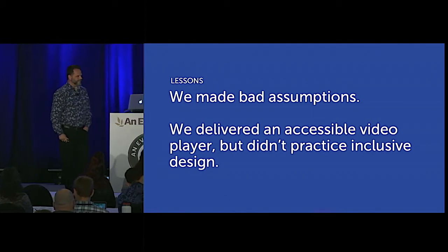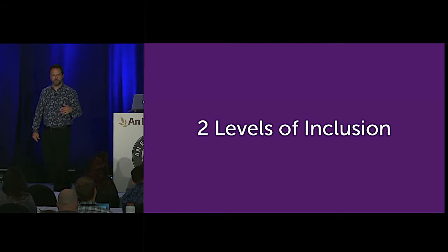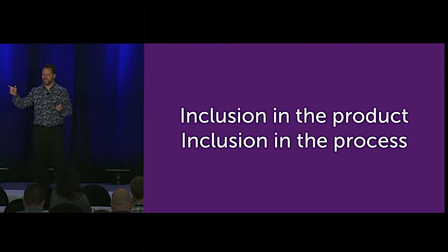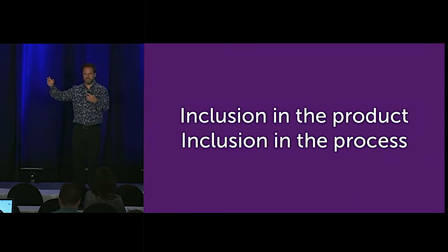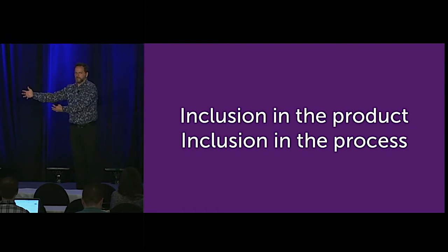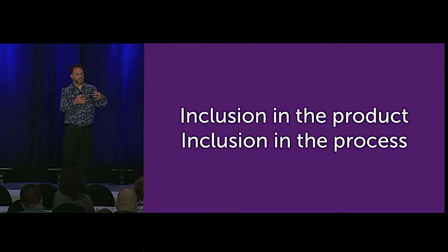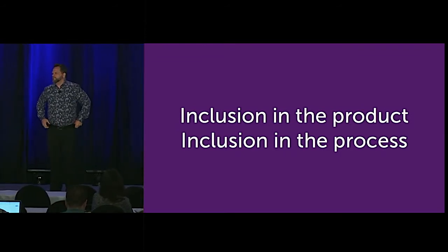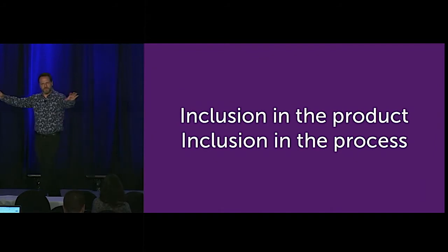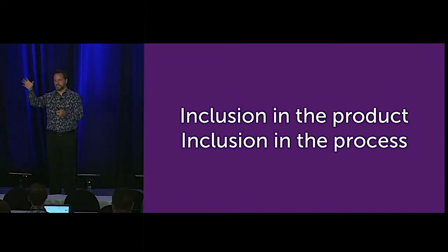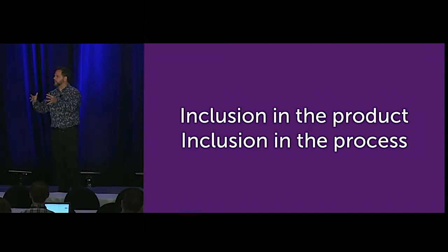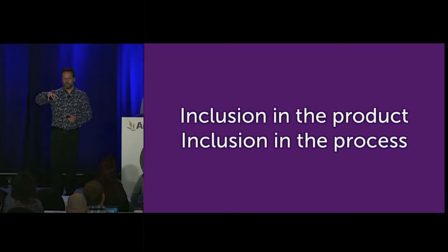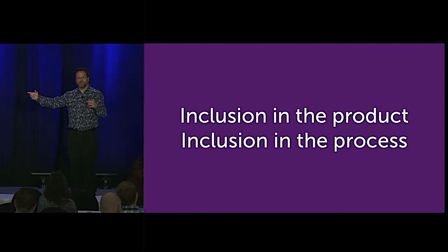When we talk about inclusive design, there are kind of two levels of inclusion: inclusion in the product and inclusion in the process. The words 'inclusive design' can take on different meanings — design can be both a noun and a verb. Think of design as a verb. So inclusive design as in we are designing inclusively. When we create an inclusive design, that usually means we're not excluding people from using it. But we can make a thing that is accessible and doesn't exclude people in lots of different ways.